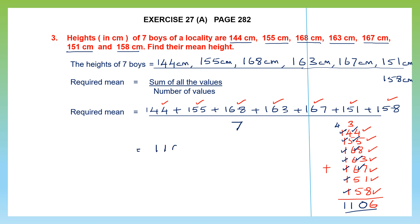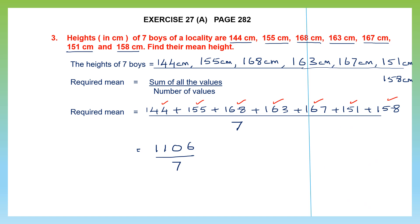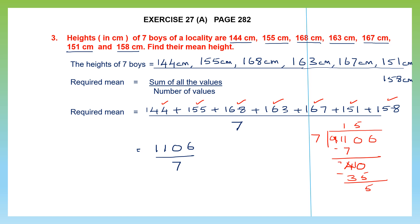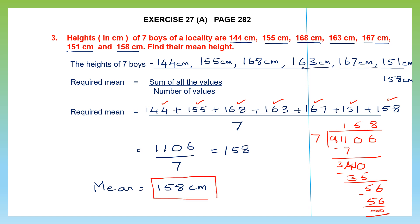So this is 1106 divided by 7. Performing the division: 11 divided by 7 gives 1 remainder 4; bringing down gives 40; 7 fives are 35, giving remainder 5; bringing down 6 gives 56; 7 eights are 56. So the mean is 158 centimeters. The mean height of the boys is 158 centimeters.